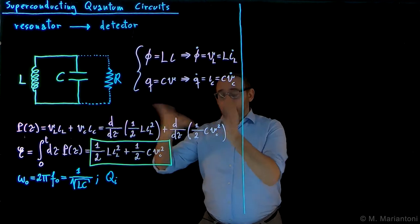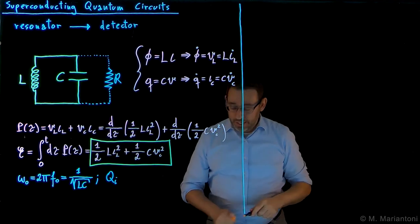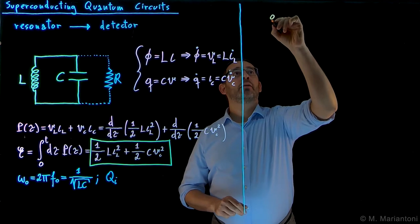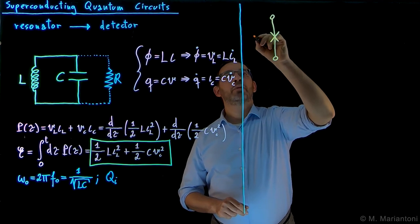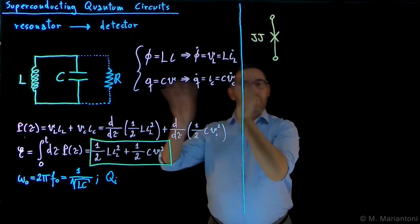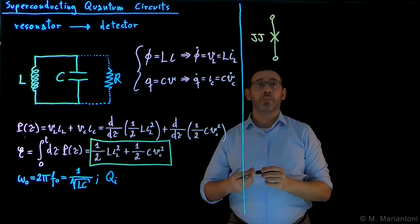In a previous lecture, in a previous video, we already encountered non-linearity, which is a Josephson junction, the circuit element represented by this symbol, a cross, JJ for Josephson junction. See our previous lecture and video on this topic.